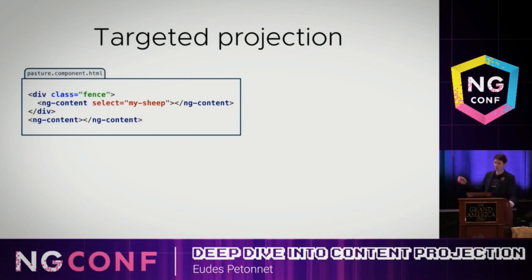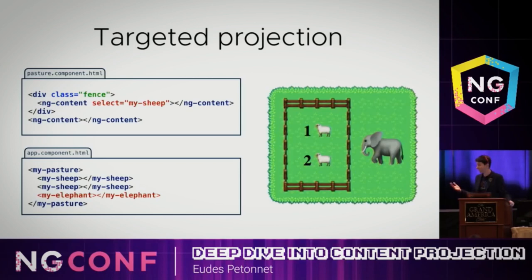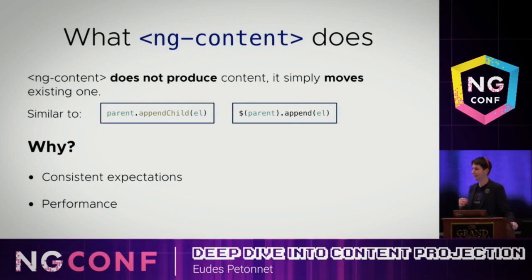We have our targeted ng-content with the select, and then outside of the fence we have a catch-all ng-content. So the sheep will go inside the fence, and anything else will go outside. Let's say we have a particularly facetious user and they try to sneak in an elephant next to the sheep. With that ng-content select, the sheep are inside the fence and the elephants stay outside.